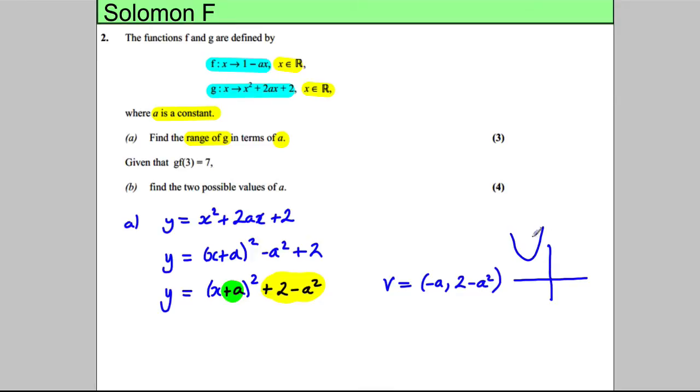Okay, so we know that the graph, it's a positive quadratic, so it's going to have its vertex at negative a and 2 subtract a squared. So clearly the range is that the y numbers can take any value from infinity down to 2 subtract a squared. Therefore f of x is going to be bigger than or equal to 2 subtract a squared.